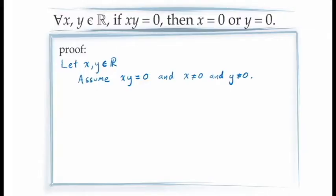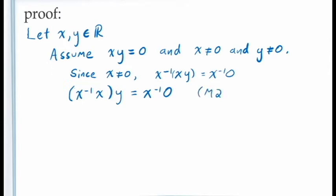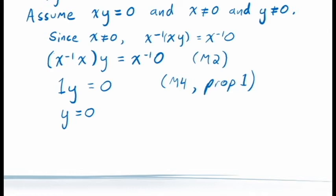Returning to the formal proof: we've assumed xy equals 0, x is not 0, and y is not 0. Since x is not 0, it has an inverse, so we multiply both sides by x inverse, giving x inverse times xy equals x inverse times 0. Regrouping by associativity (axiom M2), we get (x inverse times x) times y equals x inverse times 0. By axiom M4, x inverse times x is 1, so we have 1 times y on the left. By proposition 1, x inverse times 0 is 0, and by axiom M3, 1 times y is y — so we get y equals 0.